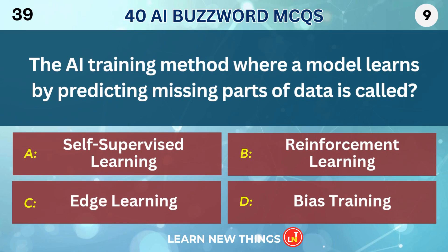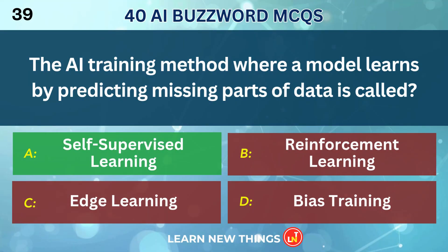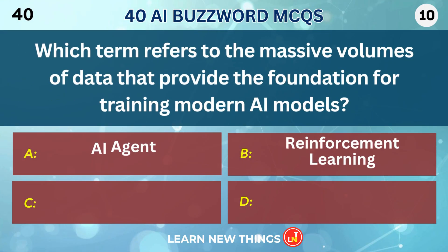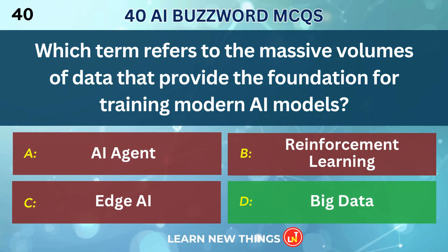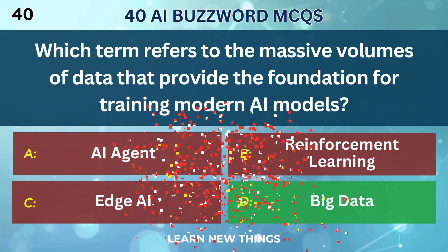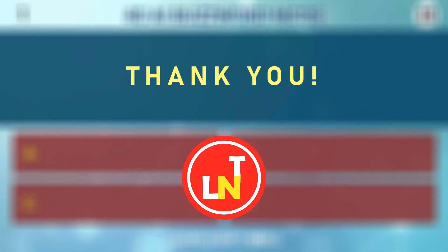The AI training method where a model learns by predicting missing parts of data is called Self-supervised Learning. What term refers to the massive volumes of data that provide the foundation for training modern AI models? Big Data.